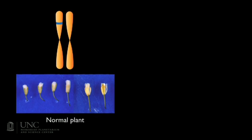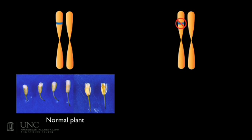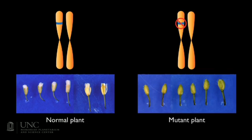Here is a normal chromosome from Arabidopsis. The stripe that you see is a gene. Remember that genes carry the plant's traits. Below this normal chromosome, you can see the development of a flower from a normal Arabidopsis. Botanists can study a particular gene by turning it off. By watching these mutant plants grow, we can learn if and how a particular gene affects flower development.